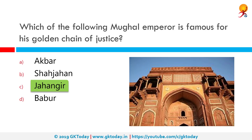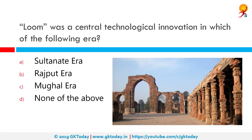Loom was a central technological innovation in which of the following eras? The correct answer is the Sultanate era. Indian textile technology seems to have flourished from the medieval period up to the Mughal era. The looms were employed for weaving several materials — silk, cotton, wool, and zari — and this is the period when it began.